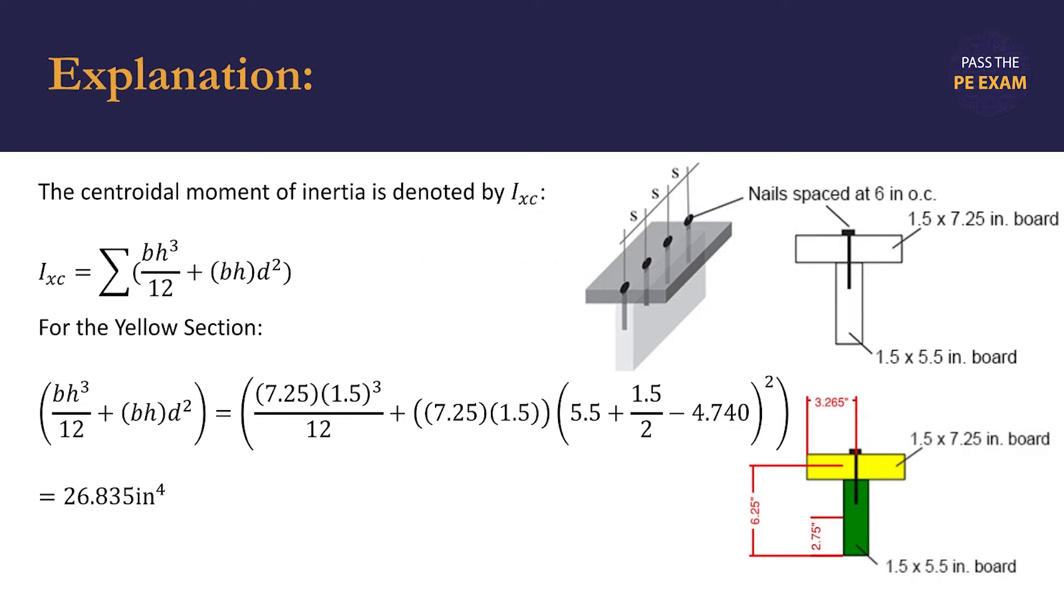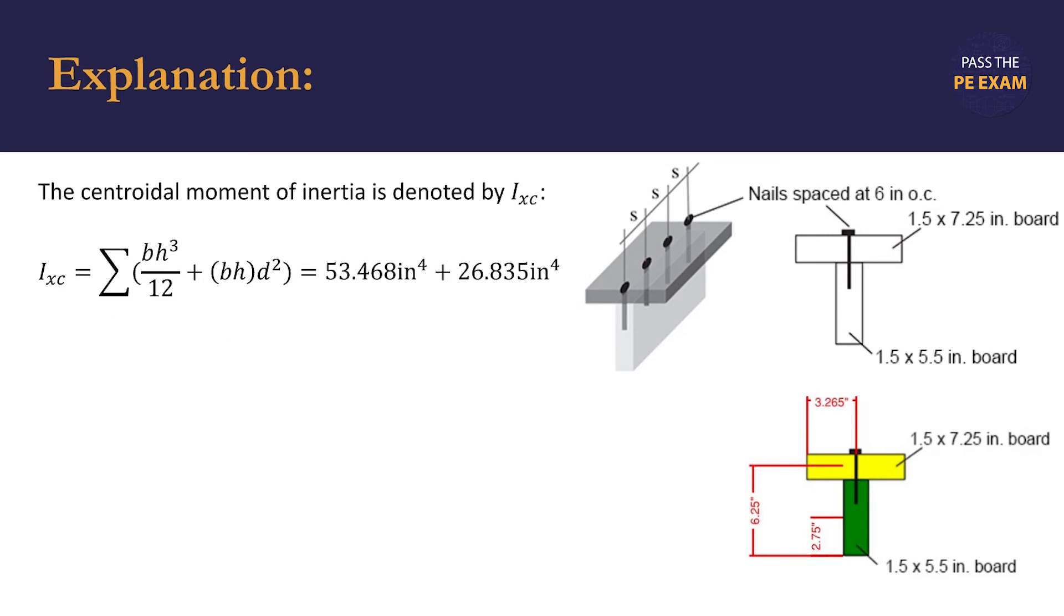We can find the centroidal moment of inertia for the entire assembly by summing the values for the green and yellow sections, summing the 53.468 quartic inches that we calculated for the centroidal moment of inertia for the green section with the 26.835 quartic inches that we just solved for the yellow section. From there, we calculate that to be 80.303 quartic inches, and we now need to find the first moment of the top flange in yellow around the centroidal axis.